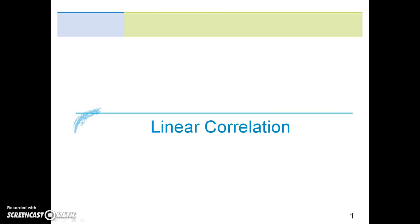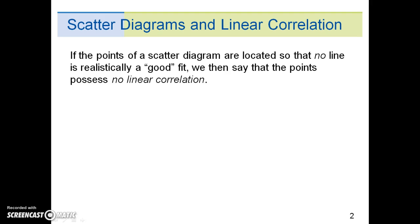This section is on linear correlations. If the points of a scatter diagram are located so that no line is realistically a good fit, we then say that the points possess no linear correlation.